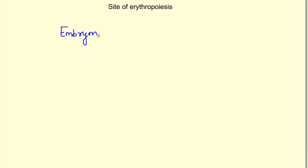In early weeks of embryonic life they are synthesized from yolk sac, from the mesenchyme of yolk sac and this stage of synthesis of RBCs is known as mesoblastic stage when we are referring to the site where erythropoiesis is taking place.